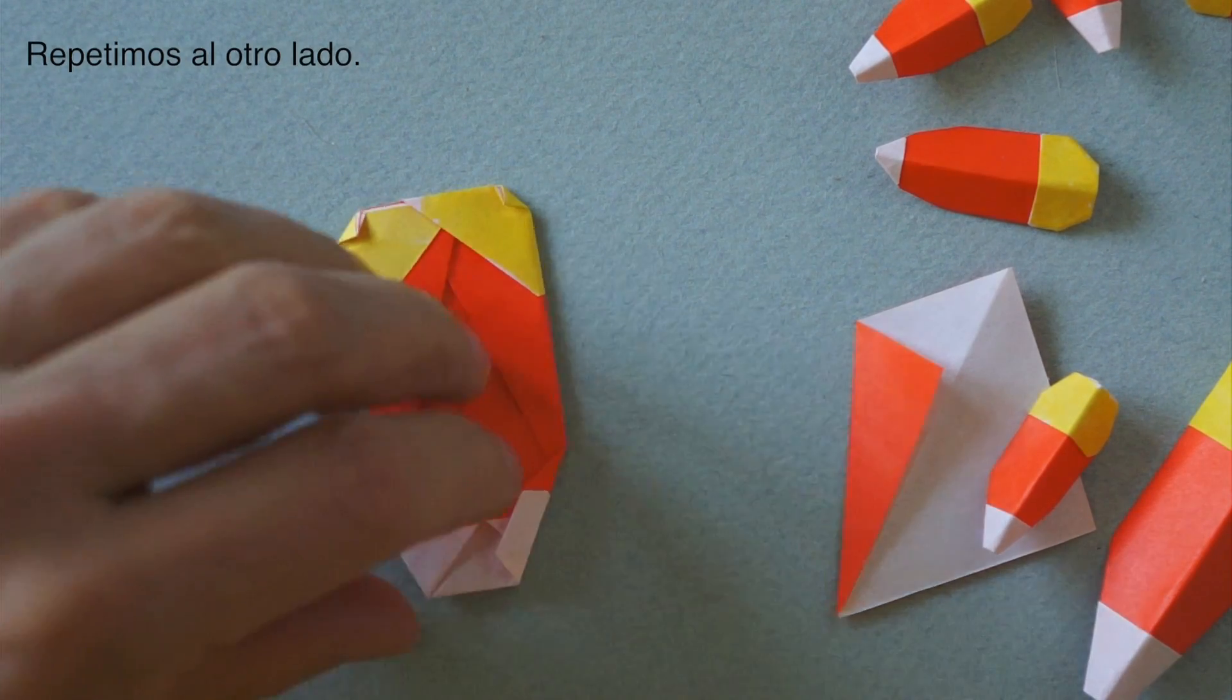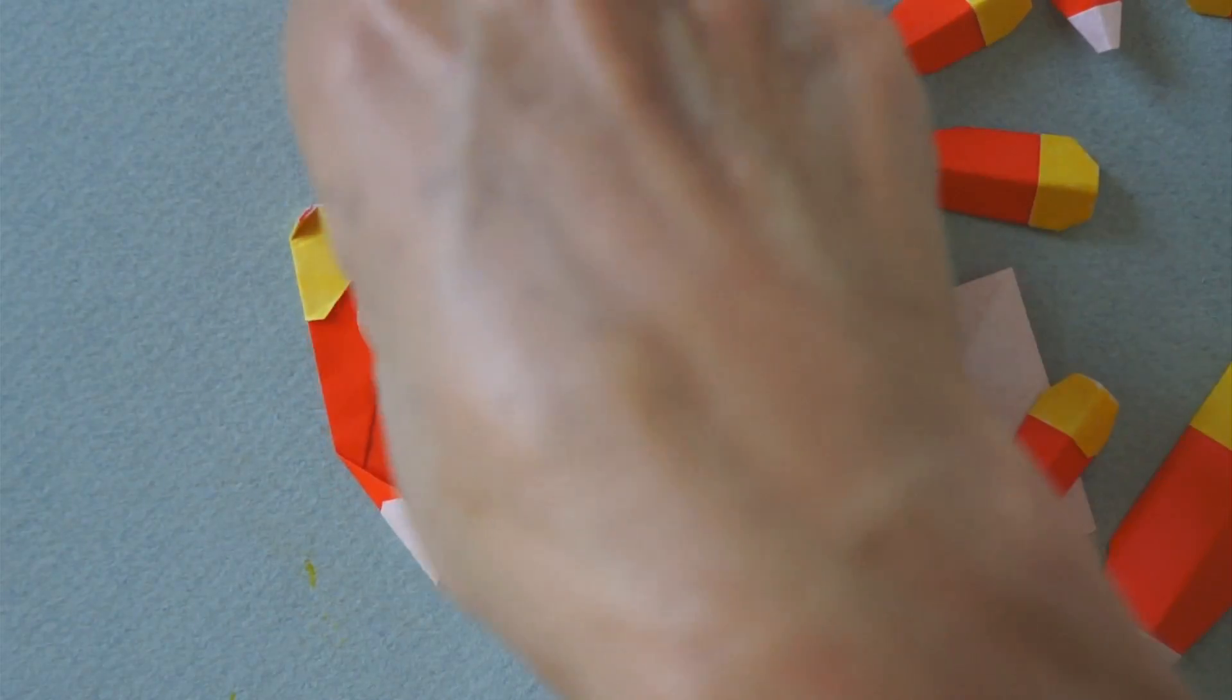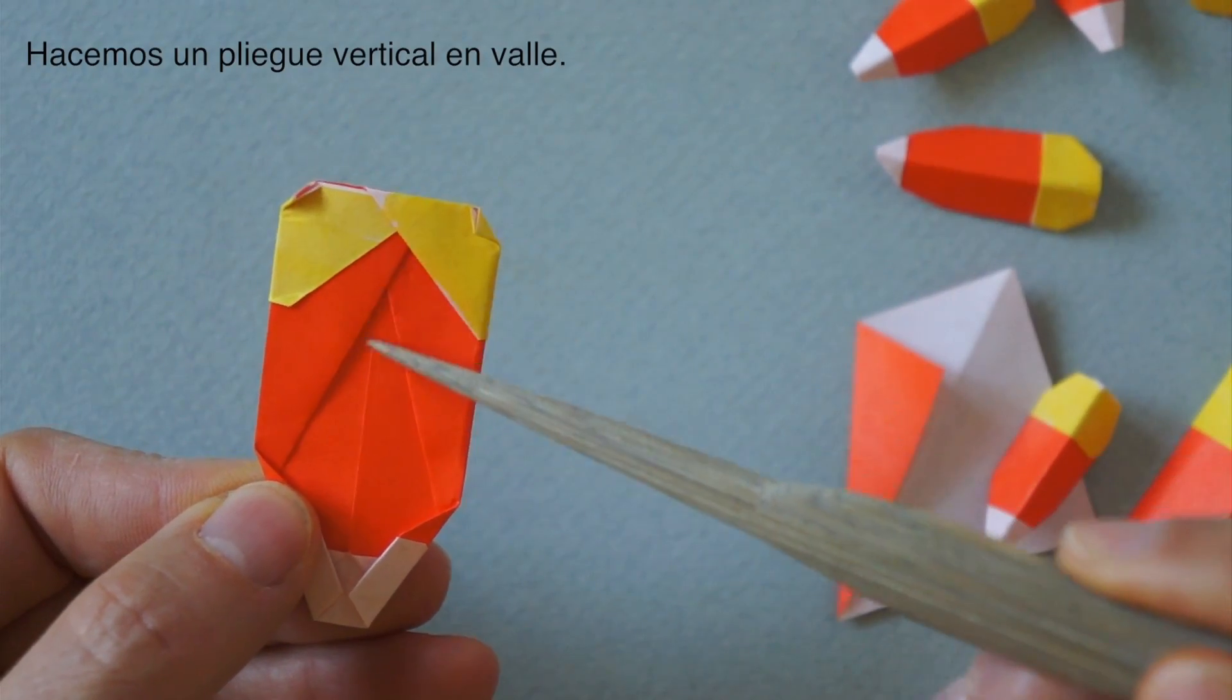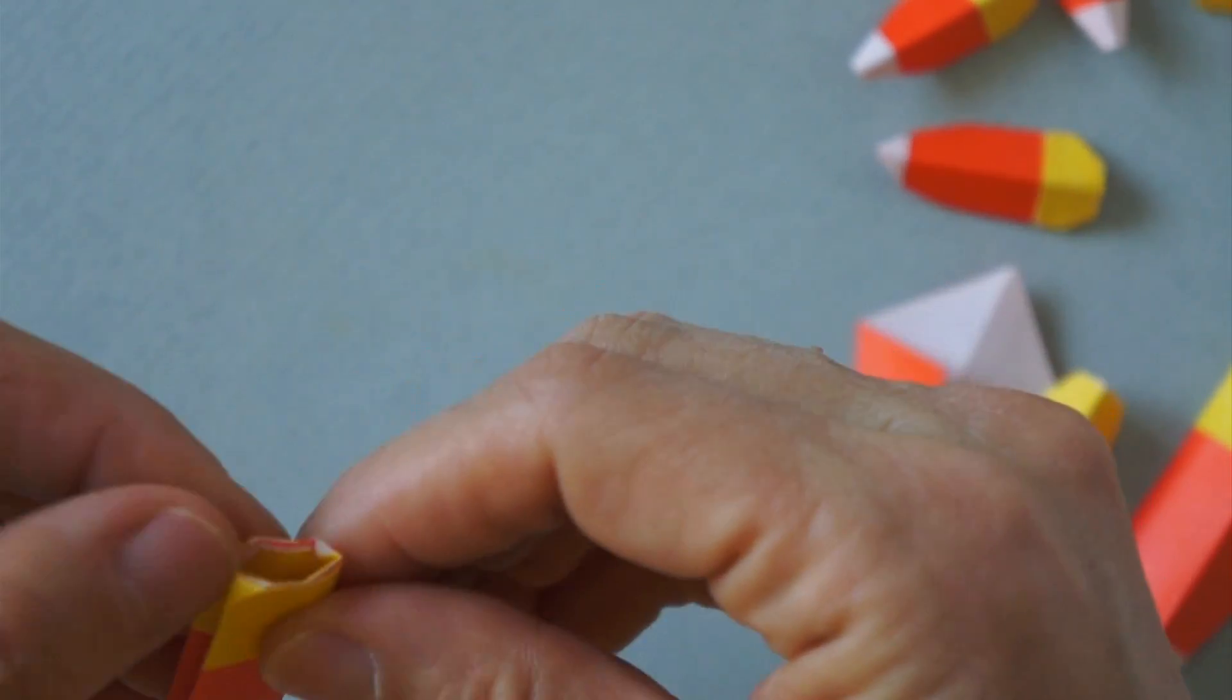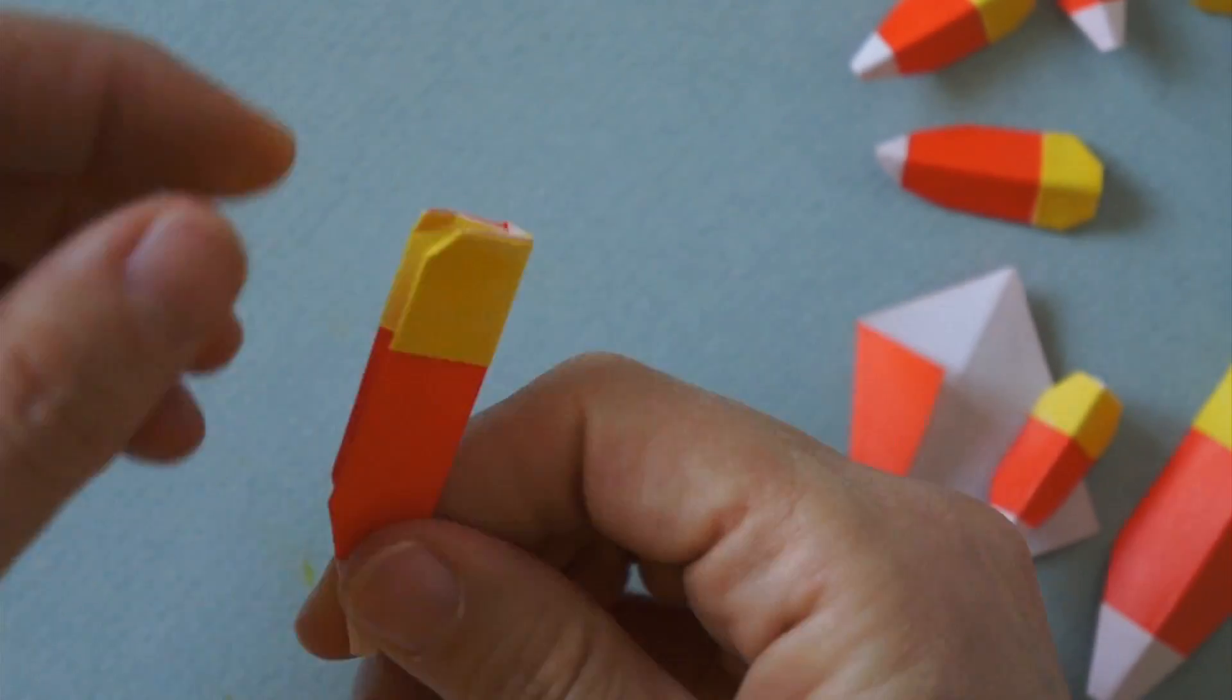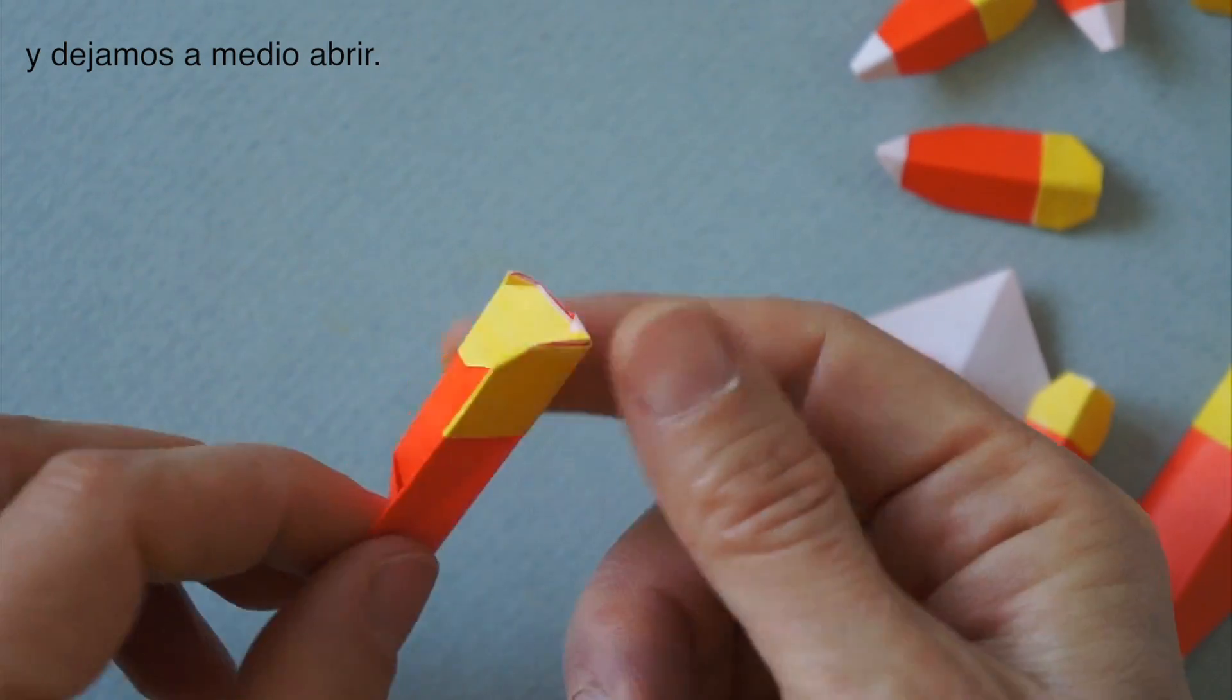And same here. Now the last thing we want to do is fold along the center here. There will be a valley fold on this side. And we are going to leave it half open, half closed. Just like so.